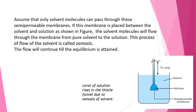Assume that only solvent molecules can pass through these semi-permeable membranes. If this membrane is placed between the solvent and solution, the solvent molecules will flow through the membrane from pure solvent to the solution. This process of flow of solvent is called osmosis.